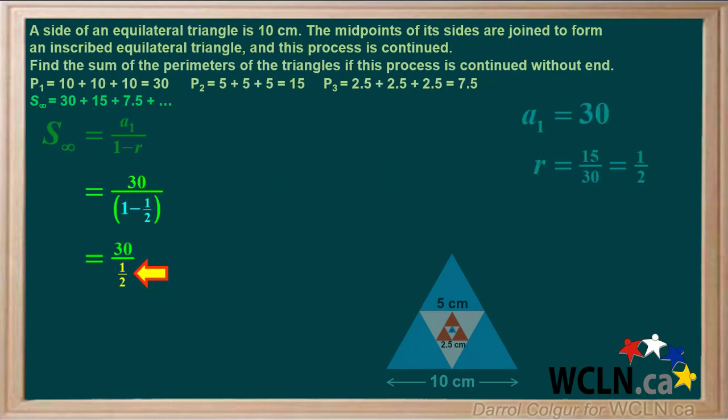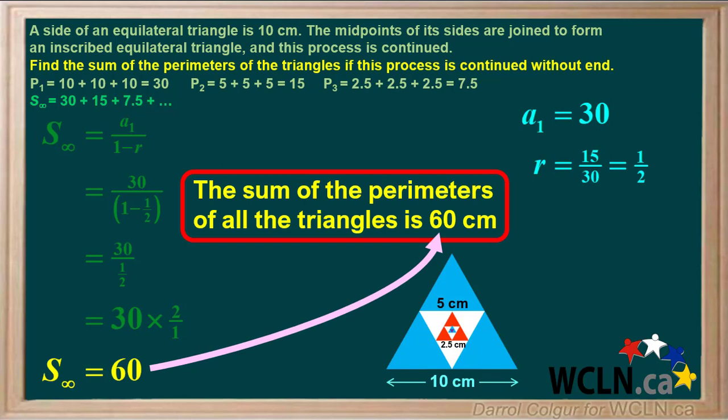1 minus 1 half equals 1 half. 30 divided by 1 half is the same as 30 times 2 over 1, which is 60. So we can state that the sum of the perimeters of all the triangles is 60 centimeters.